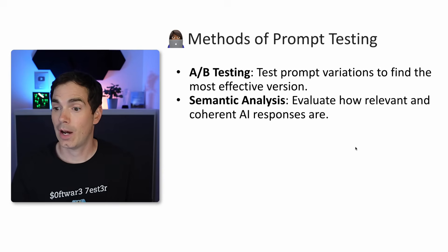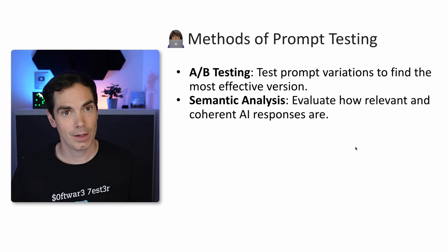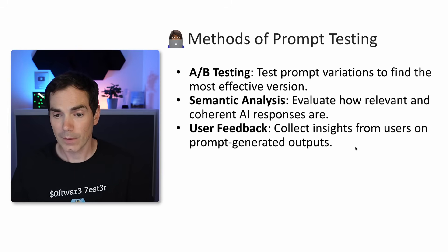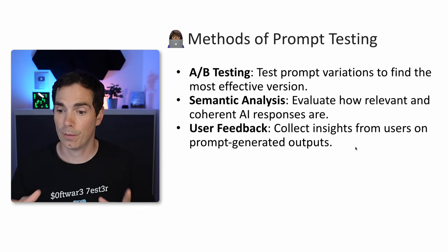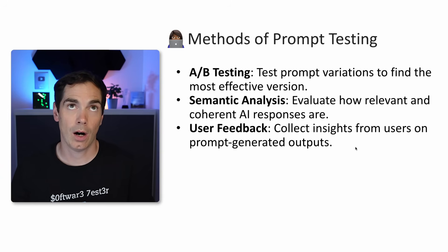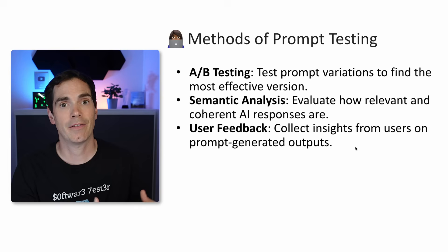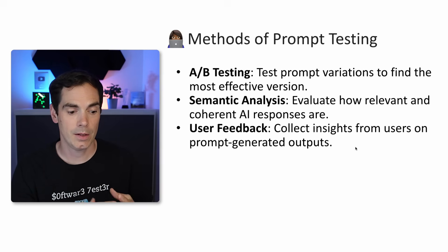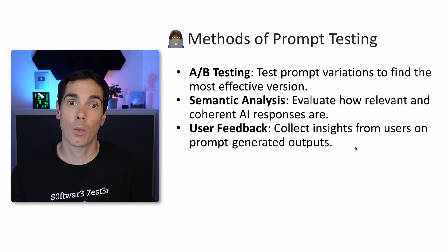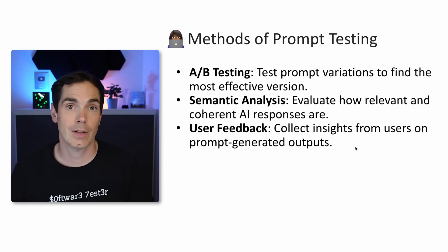Semantic analysis: evaluate how relevant and coherent AI responses are. Really check the outcome — is it something where you can identify something has gone wrong in the prompt? User feedback: collect insights from users on prompt-generated outputs to identify if the prompt was helpful or not. This is especially relevant when you're designing your own assistants or agents with a system prompt or mega prompt. You can ask your users whether the agent is really working for them, and compare it with a changed prompt variant.